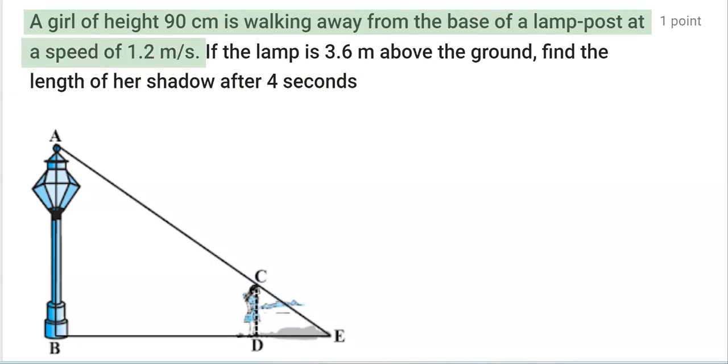As you can see in the figure, the girl is moving from B towards D, and the height of the girl is also mentioned as 90 centimeter, that means CD is 90 centimeter.